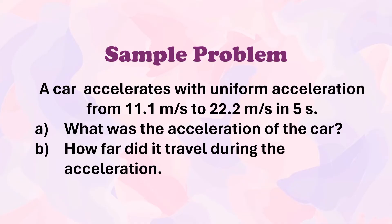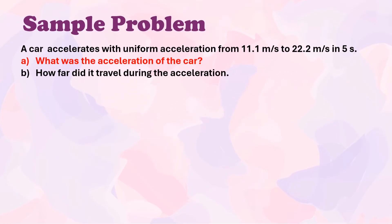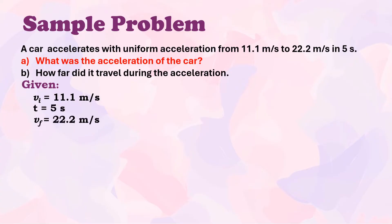First, we're going to answer: what was the acceleration of the car? Let us identify the given. The initial velocity is 11.1 m/s. Time is 5 seconds. Final velocity is 22.2 m/s. The unknown in question A is acceleration.